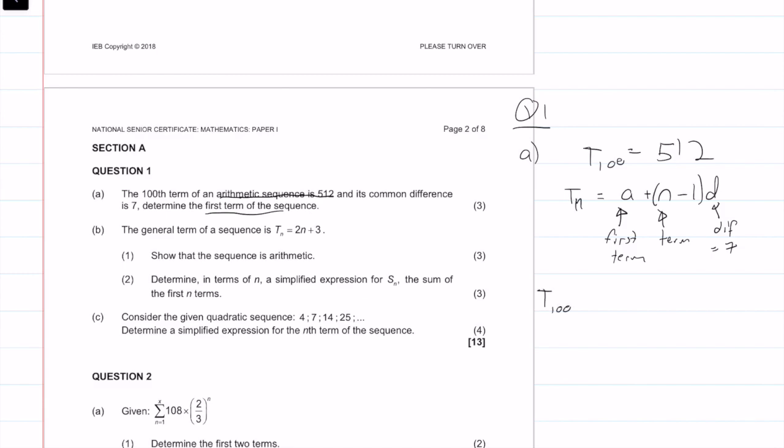So T100, we can say is equal to A plus 100 minus 1 times D, difference. We know the difference is 7. So then we can simplify this. We also know that T100 is 512. So 512 is equal to A plus 99 times 7. So A, or the first term, is the only unknown. So we can solve for A, and A is equal to minus 181. So that would be your answer for question A. The first term in the sequence is equal to minus 181.